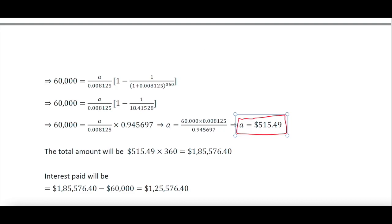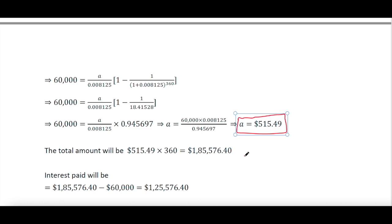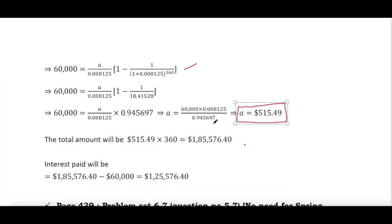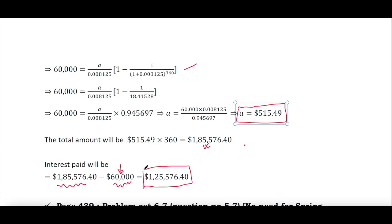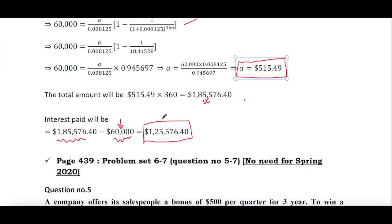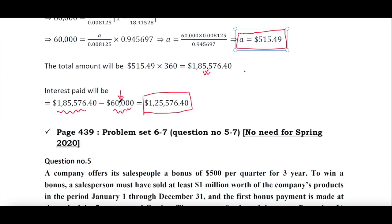The total payment is found by multiplying the installment amount by the total number of installments, 360. The total interest paid is the total payment minus the principal amount — that is, the total amount you pay over 30 years minus the $60,000 principal. Part B asks for the total amount of interest paid: total payment minus principal amount.